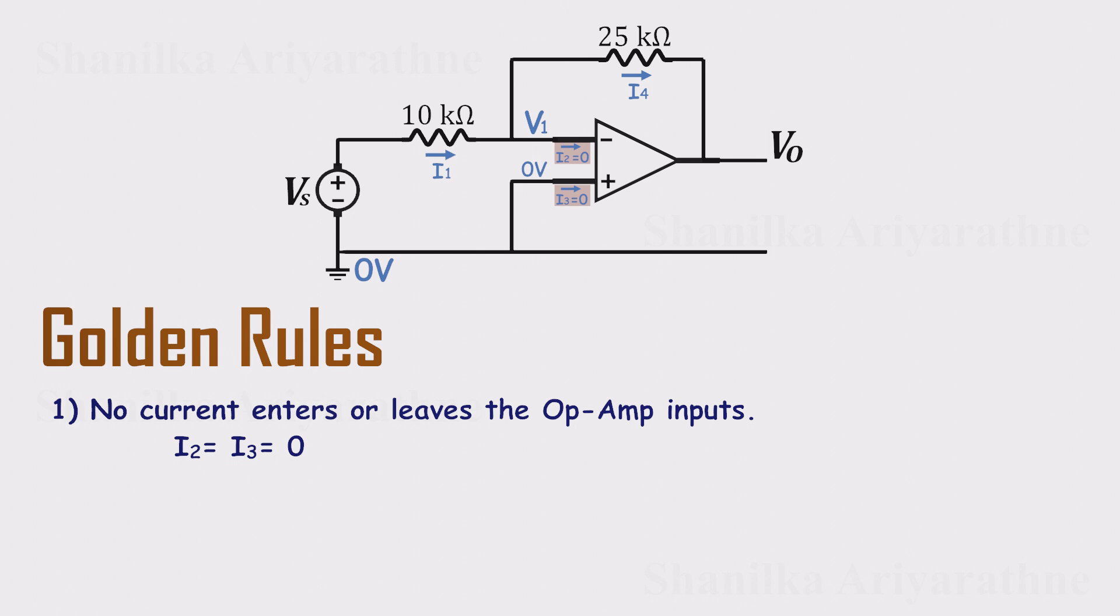And if no current enters the op-amp, then the same current that flows through the 10k input resistor must continue through the 25k feedback resistor. So I1 equals I4. That's our first key relationship.